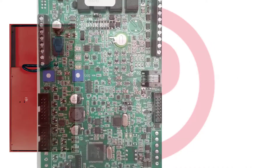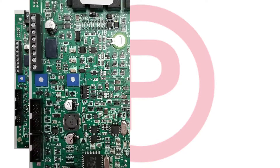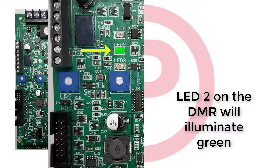The Potter voice panels have five LEDs on the DMR which will help guide you through typical troubleshooting processes. Upon normal conditions, all LEDs will remain off besides LED 2, which is green and means the system is in a normal status.